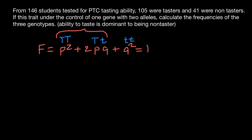The first phenotype is testers — the dominant phenotype — and the second phenotype is non-testers. We have two alleles: dominant T and recessive t. In the gene pool, p plus q equals one, meaning dominant T plus recessive t equals one, and these two alleles produce three genotypes and two phenotypes.